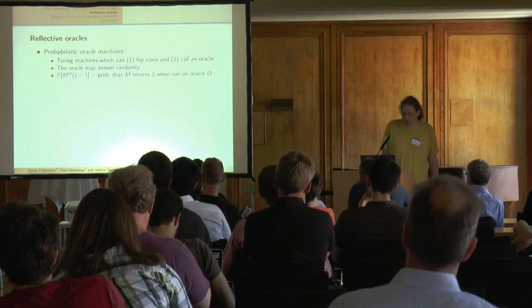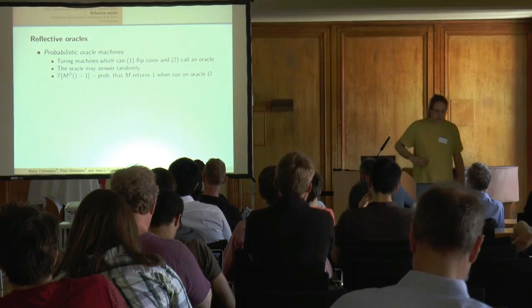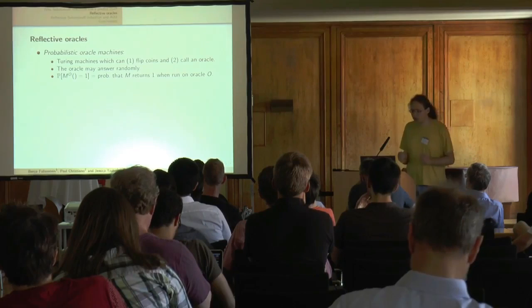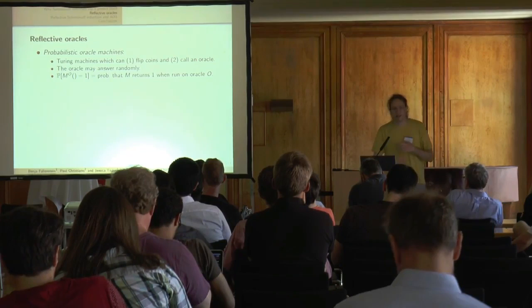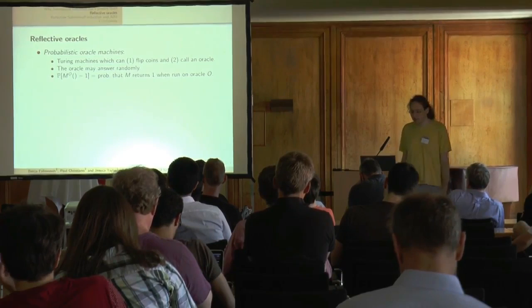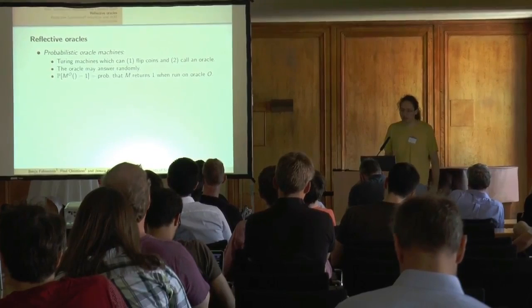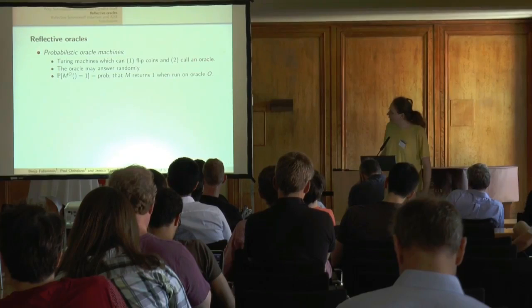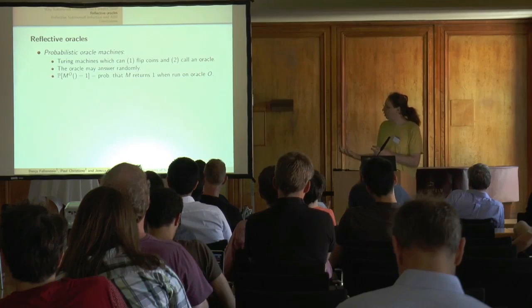Our new thing is reflective oracles. Instead of using Turing machines, the things we feed to our reflective Oracle are probabilistic Oracle machines — Turing machines that can flip coins and call our Oracle. That's where the self-referential aspect comes in: we can feed things to this Oracle that themselves can call the Oracle, and the Oracle answers some questions randomly.